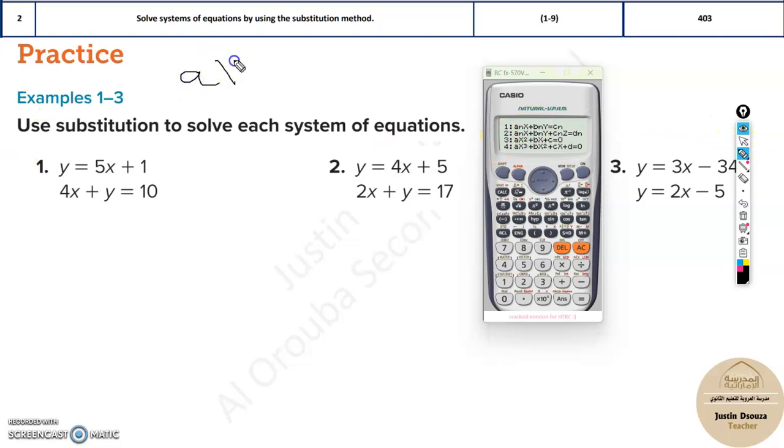The standard form is given as ax plus by equals c, where c is a constant. What does this mean? First, you need to have the x variable and the coefficient of x. Next, we should have y and the coefficient, that's b.